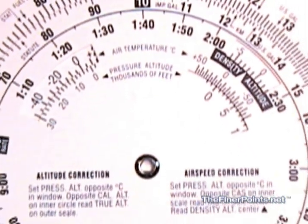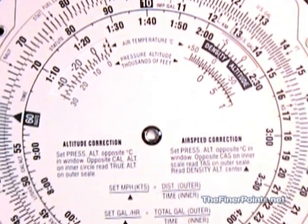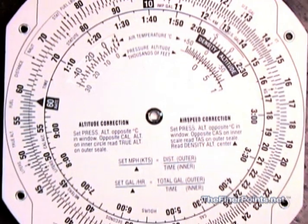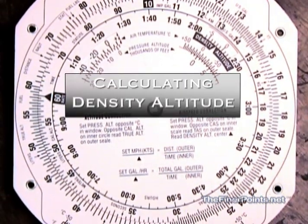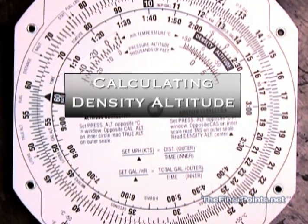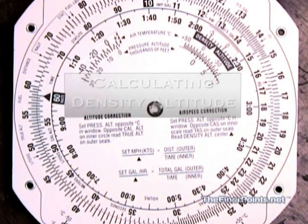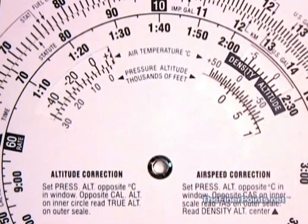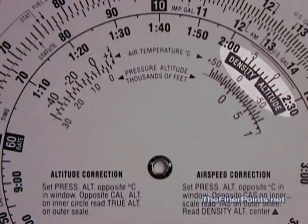Here we're looking at an E6B flight computer and preparing to work on calculating density altitude. Notice on the upper right corner of the E6B you'll see the black pointer window for density altitude.